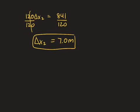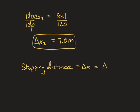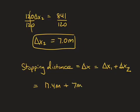For the total stopping distance, which we'll just call delta x, that's going to be the reaction distance delta x1 plus the braking distance delta x2. So we have 17.4 meters — our reaction distance — plus 7 meters — our braking distance. So the total stopping distance is going to be 24.4 meters.